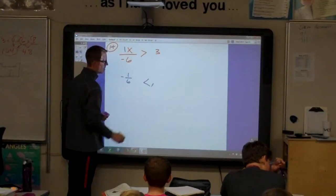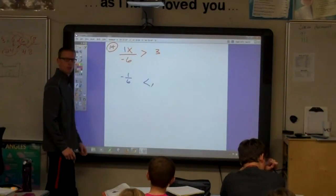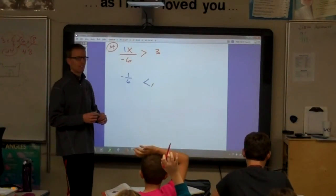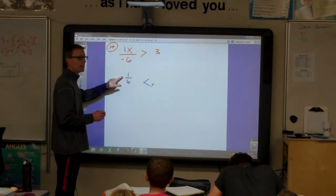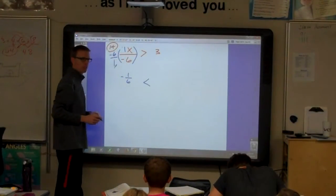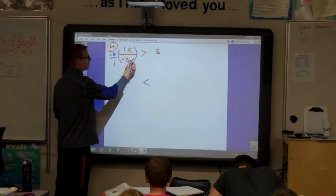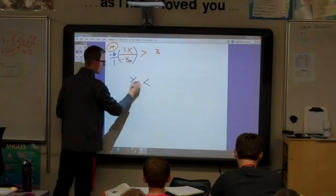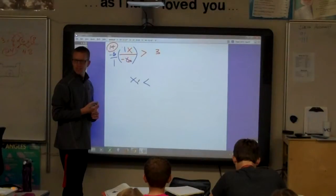So, now we have to make that a less than sign. We have to multiply by the reciprocal. What's the reciprocal? James? Negative 6 over 1. Negative 6 over 1 is the same as negative 6. Cross out the negative 6's. That leaves us 1X. And... What do we do on the other side?